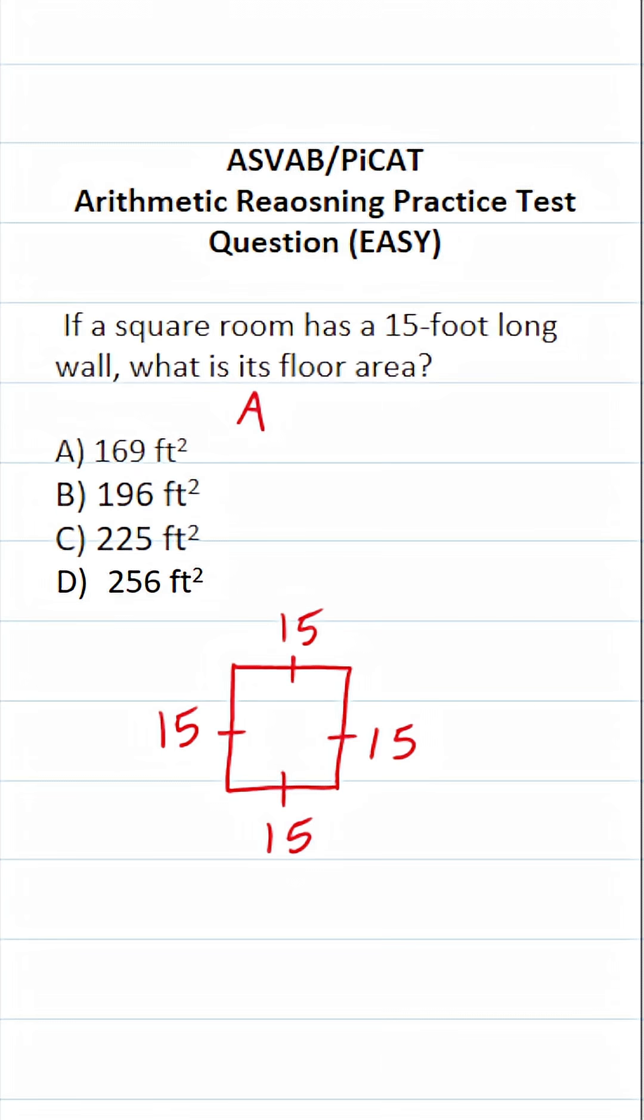So how do we find the area of a square? Well, it's going to be its side length times its side length. And of course, S times S is the same thing as S squared. You can use either one of these formulas. They mean the same thing.